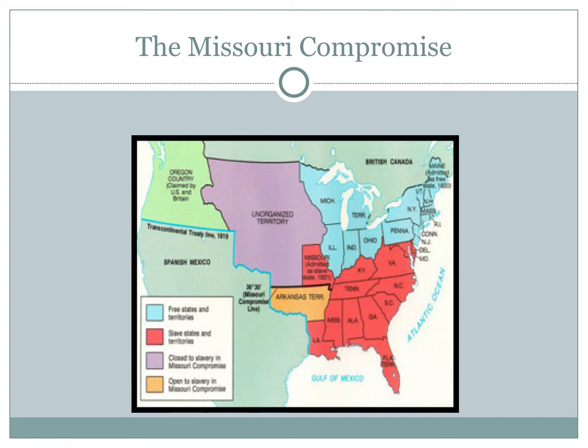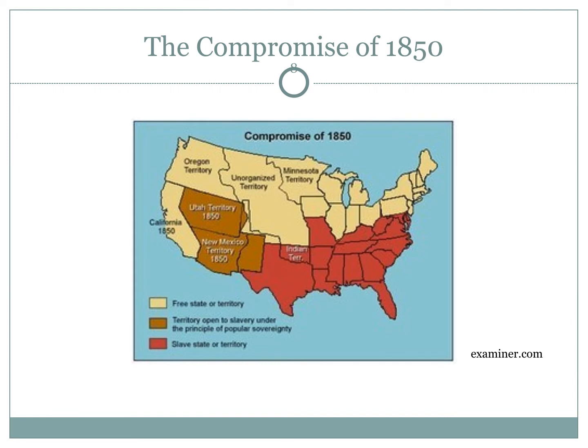Looking at this map, you'll notice this isn't even all of the United States — this is what the U.S. looked like in 1820. We know the early and mid-1800s were a time of geographic expansion. The Missouri Compromise solved the issue of what to do with the Louisiana territory, but it didn't solve what would happen when the United States acquired more land. That would happen over the next several decades, leading to another crisis and the Compromise of 1850.